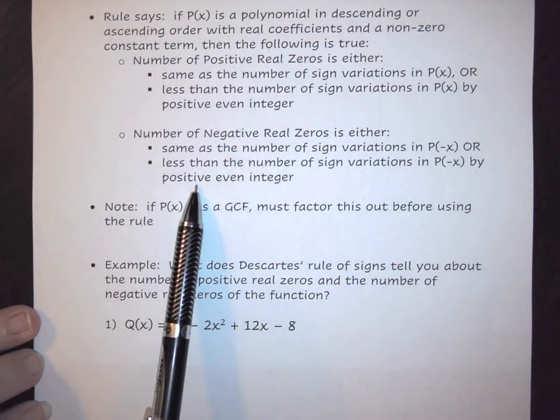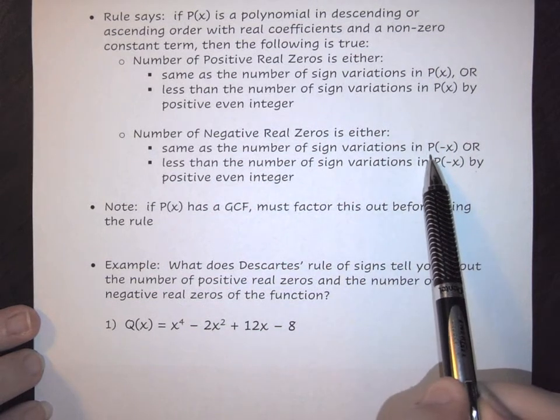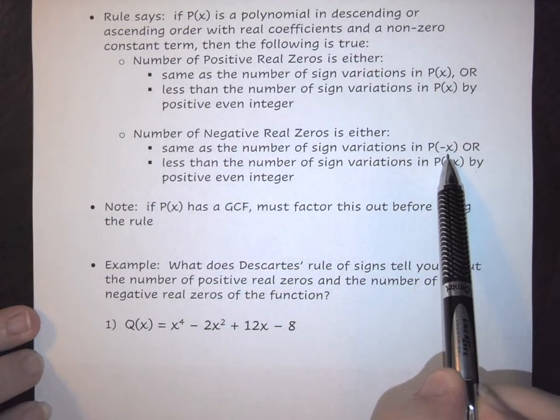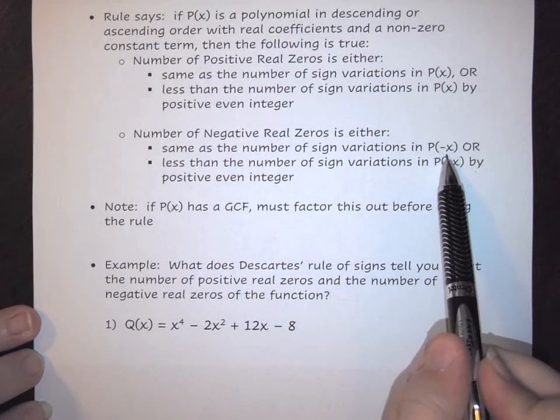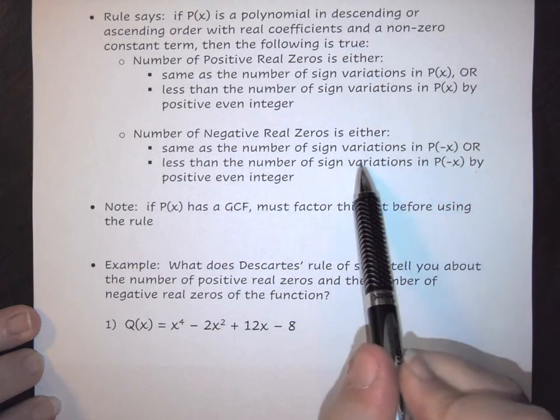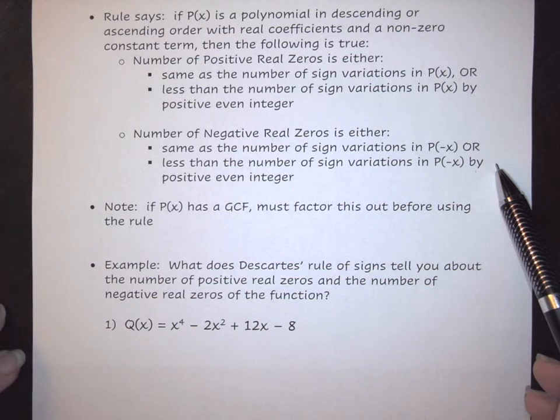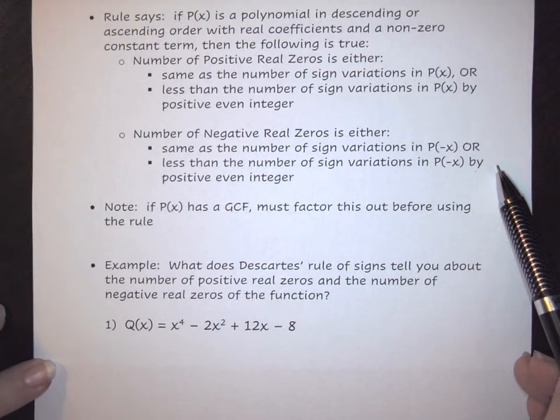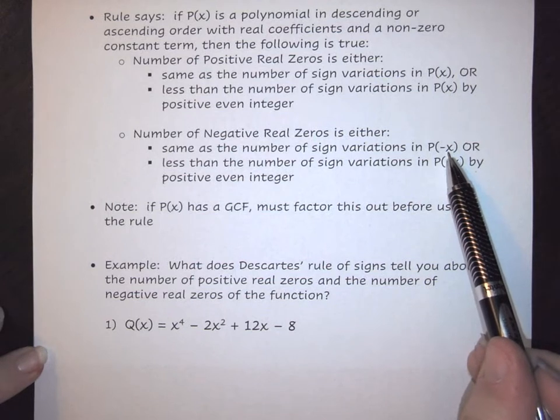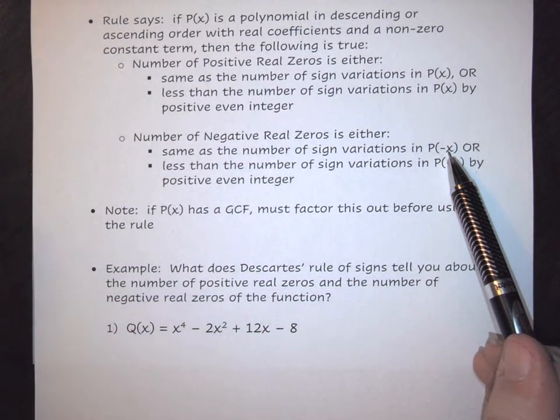The same rule applies for negative zeros, but this time we use P(-x). You input -x, resimplify the equation, and see how many times the signs change. Then count from that number down by positive even integers. For example, if you have five sign variations when evaluating P(-x), then your number of negative real zeros would be 5, 3, or 1.